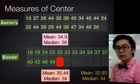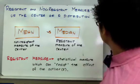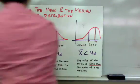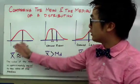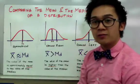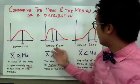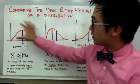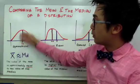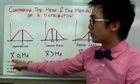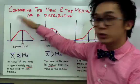That is basically how we explain the difference between a resistant and non-resistant measure of center. Comparing the mean and median by looking at the shape of a distribution, we see that in a symmetrical distribution, the value of the mean and the median are both at the center, because the numerical value of the mean is approximately equal to the numerical value of the median when the distribution is symmetrical.